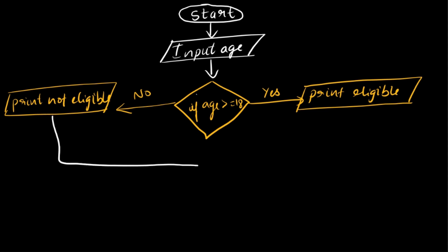The next step is common to both, so we can make it in a common way. The stop is also in this form. So this is the algorithm and the flowchart for this question. Thank you and stay tuned for more such questions.